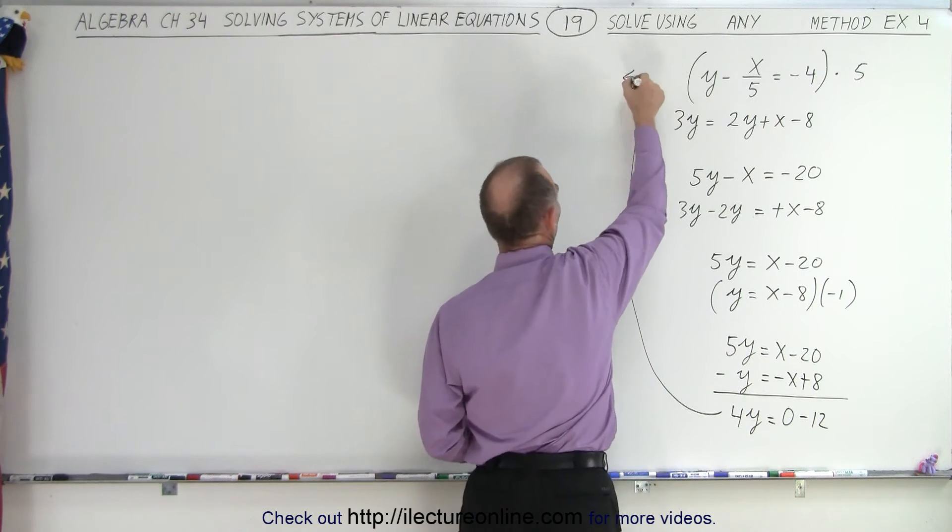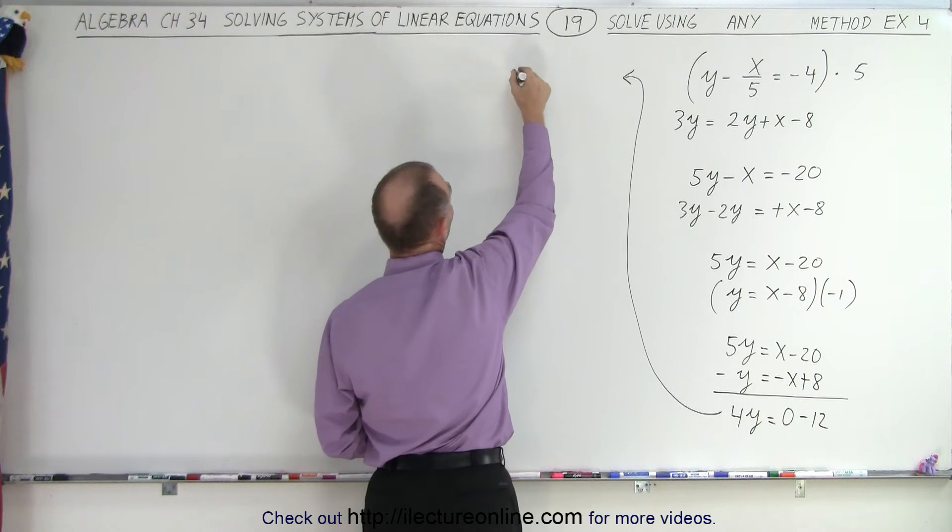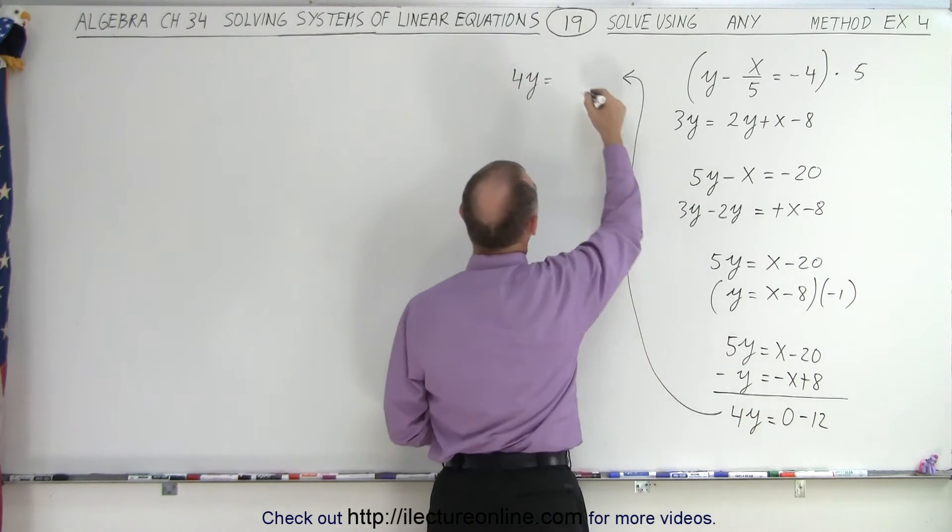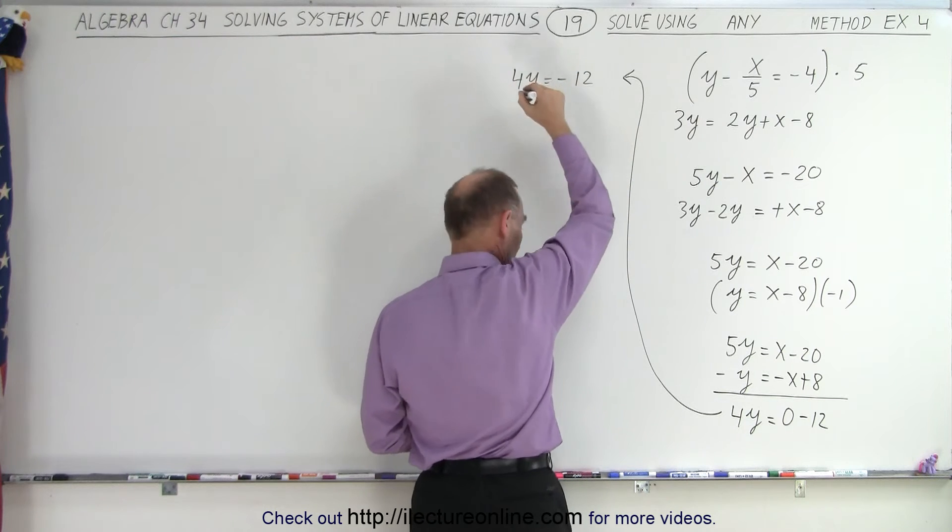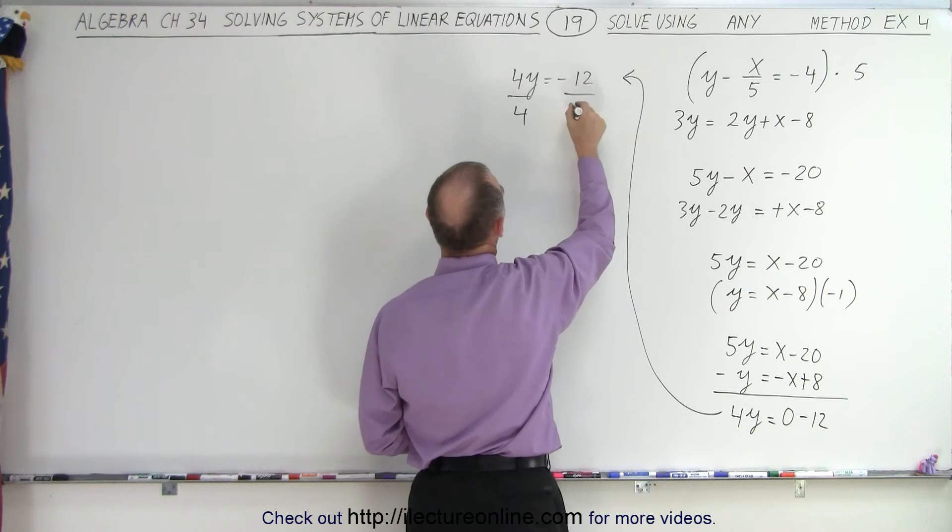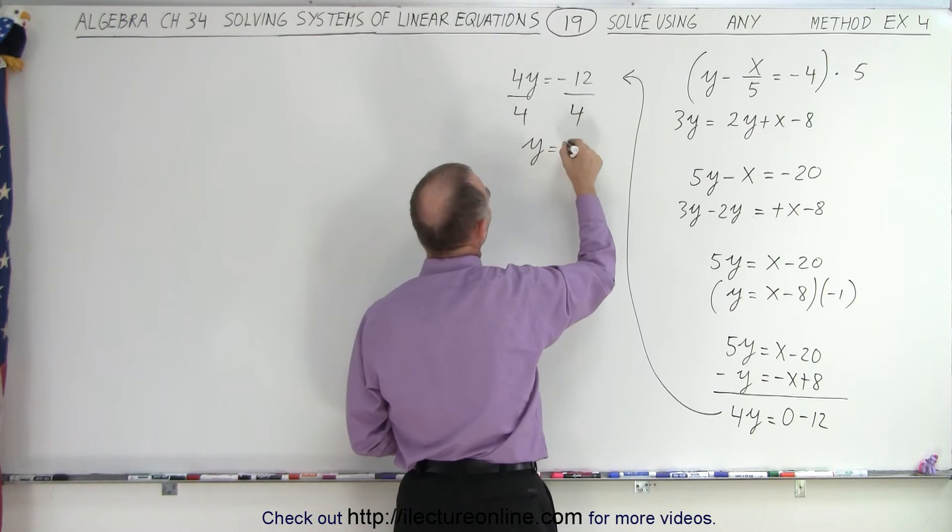And if I come over here to finish the job, I can say I get 4y is equal to, I can drop the 0, I get minus 12, and that should be 4y, so divide both sides by 4, and I get y is equal to negative 3.